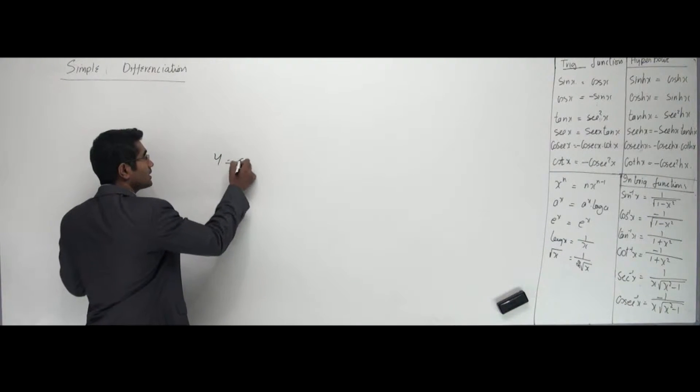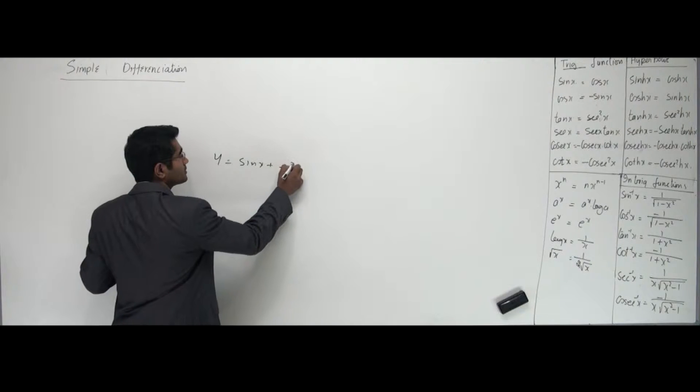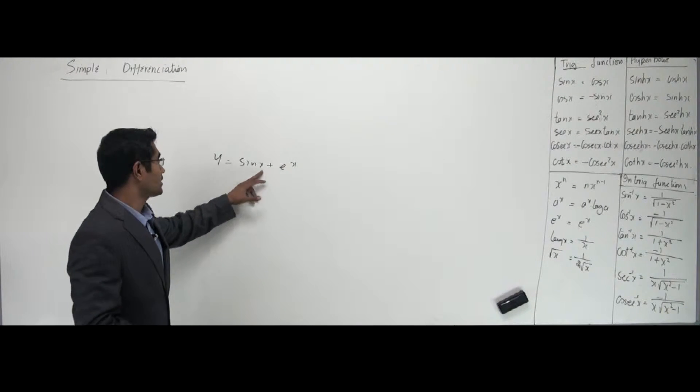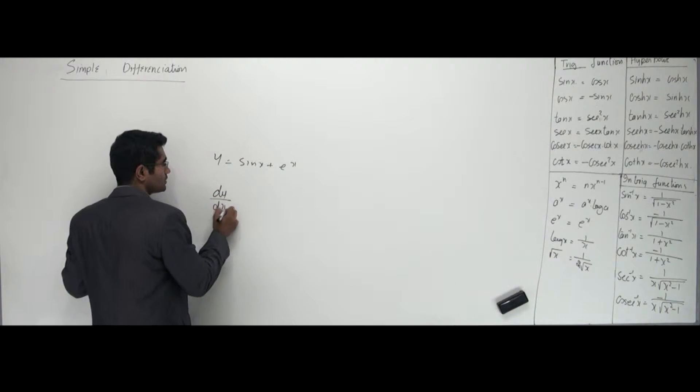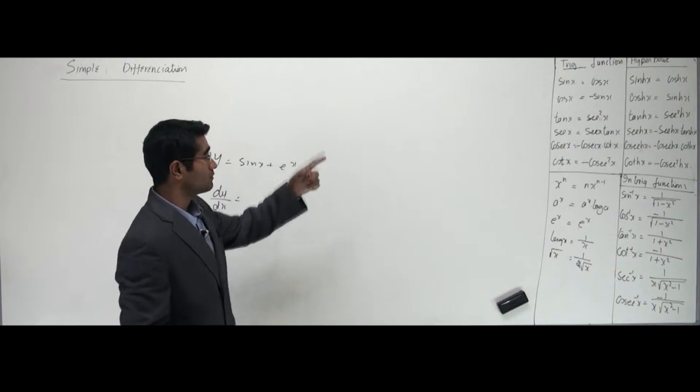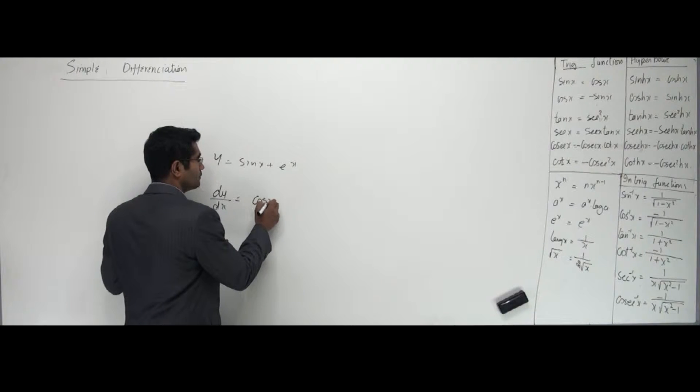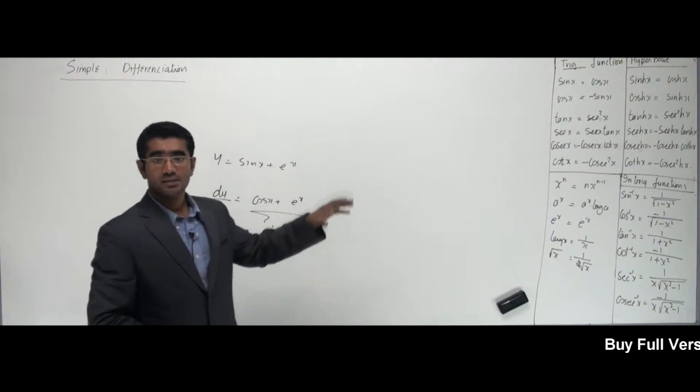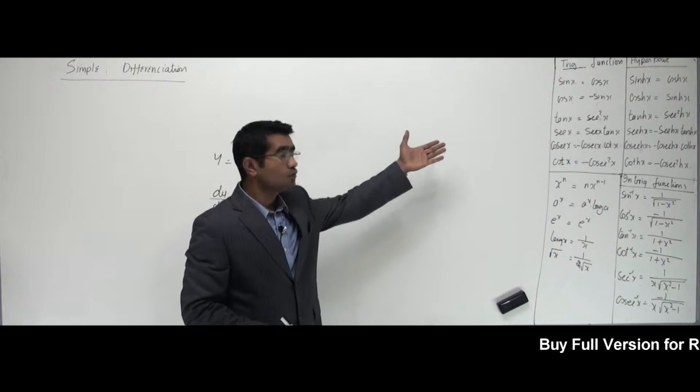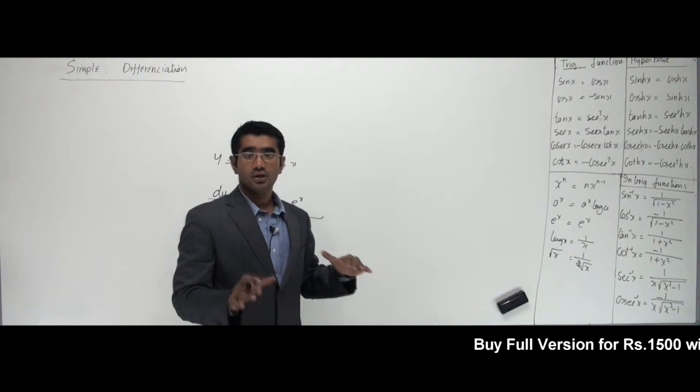Now if you have y is equal to sin x plus e power x. Now that's simple. There are two functions here and they're connected with the plus sign. So what I do is I differentiate them using the formulas which I know. Differentiation of sin x is what? The first guy, cos x. And differentiation of e power x is what? e power x. That's my answer. See, I didn't do anything. Just know the formulas right here. That's it.